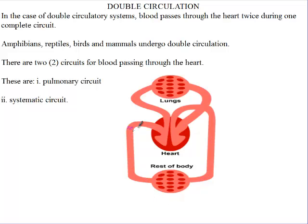The first is where the deoxygenated blood enters the heart. It is then pumped to the lungs where the blood will gain oxygen. It will come back to the heart, and then it will be pumped to the rest of the body.